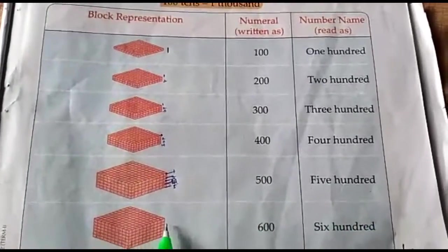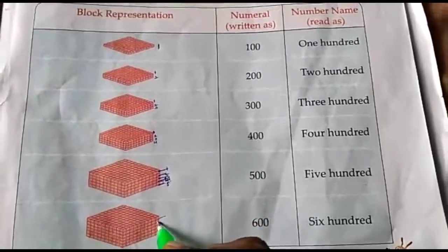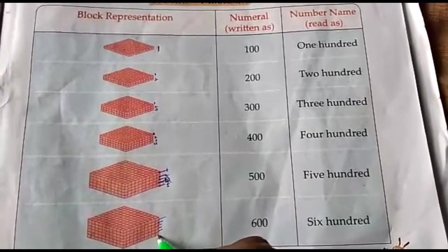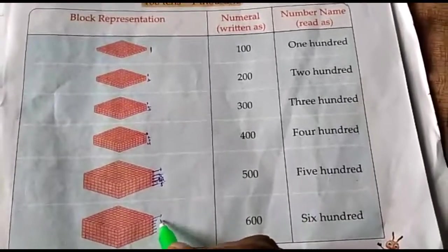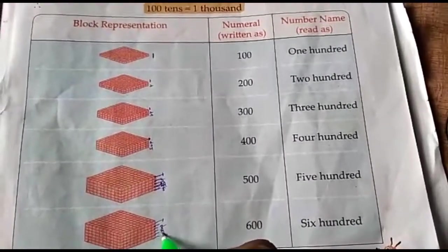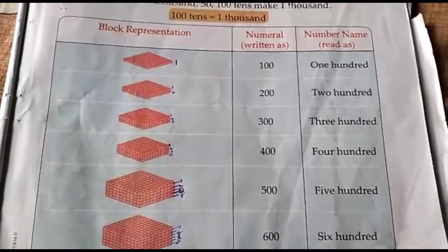Next. Six hundred. One, two, three, four, five, six. Okay children. Six. Six hundred number. And six hundred spelling.